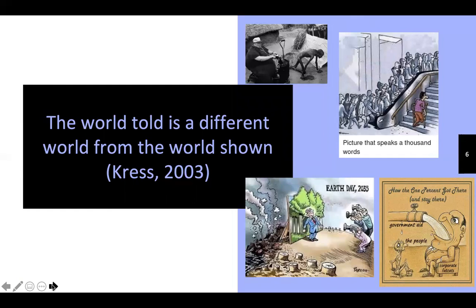The world told is a different world from the world shown. If you look at the four images here, they have ironic meanings. Sometimes messages are easier to be deciphered through images rather than language, and they are easier to be shown in the form of an image rather than in written form.